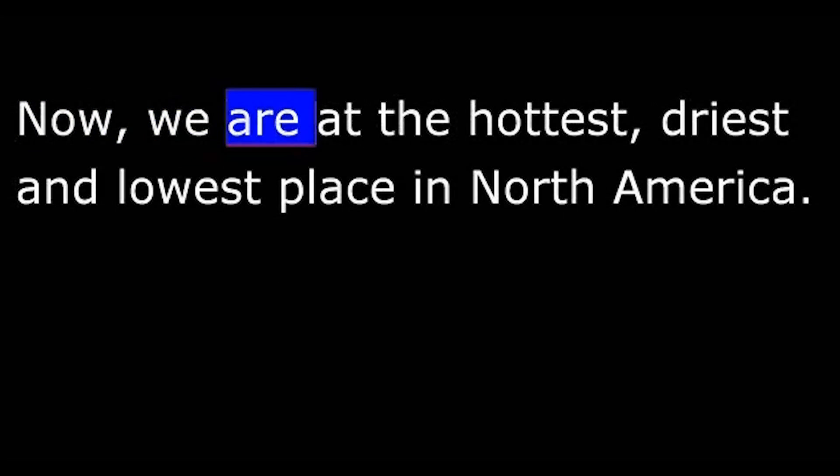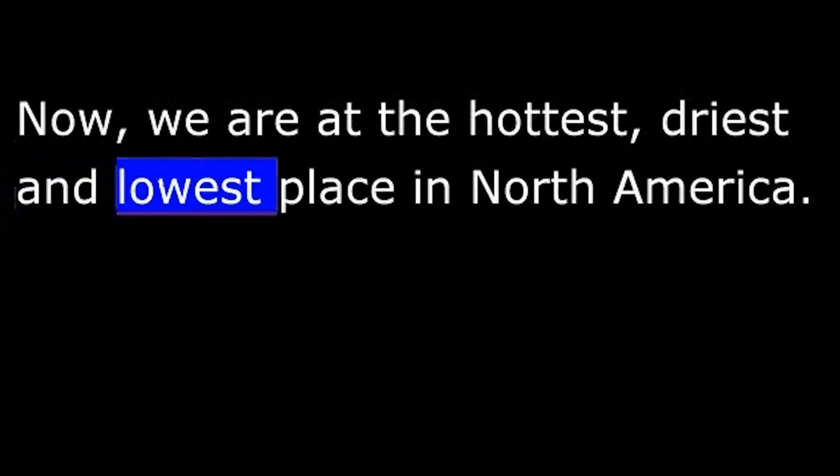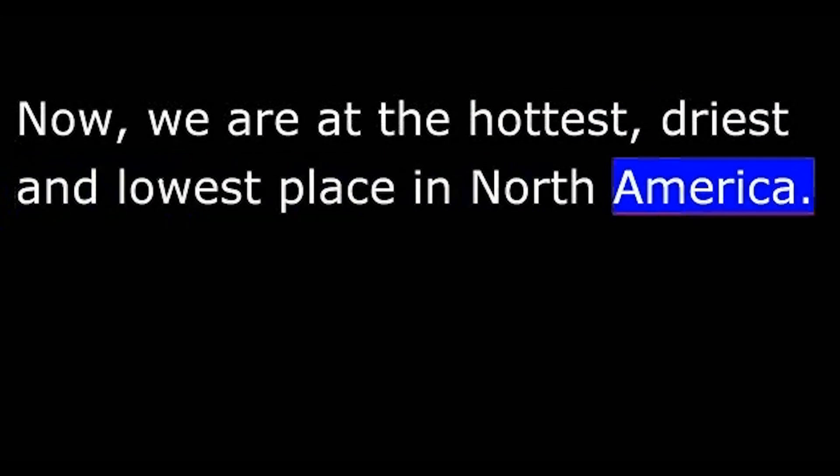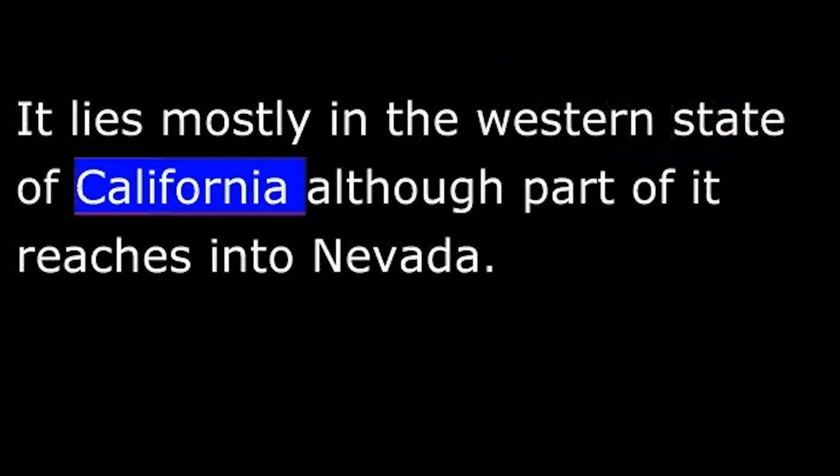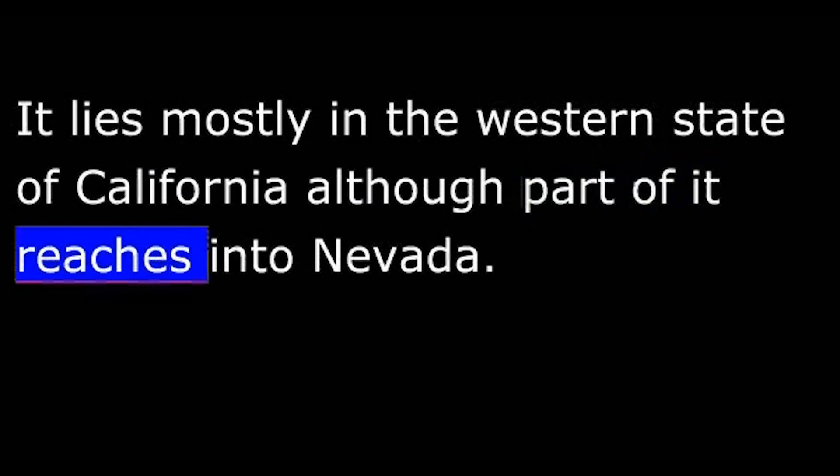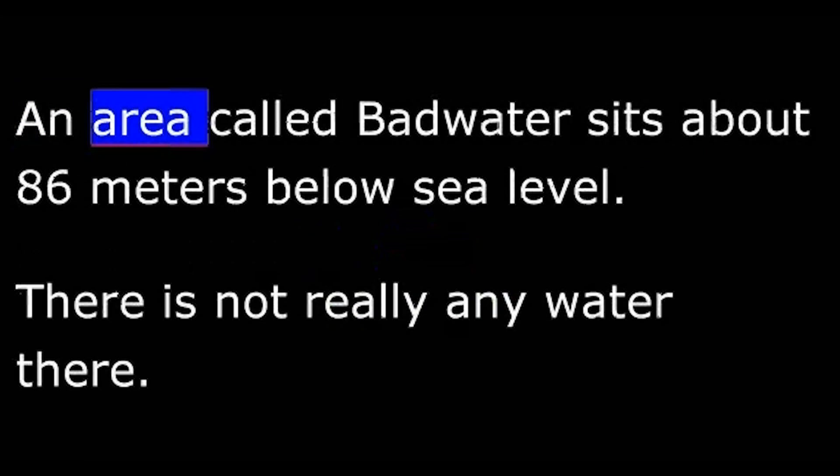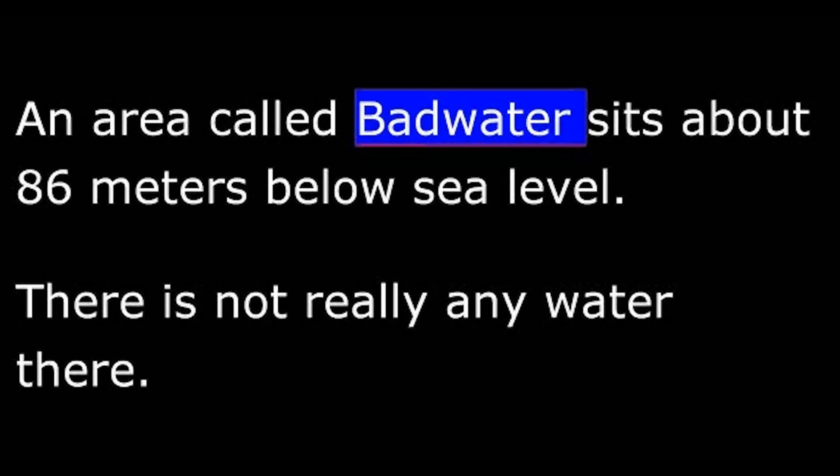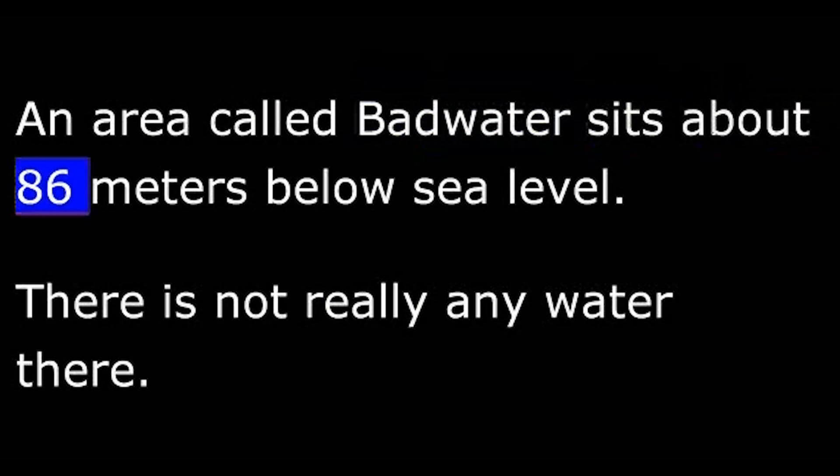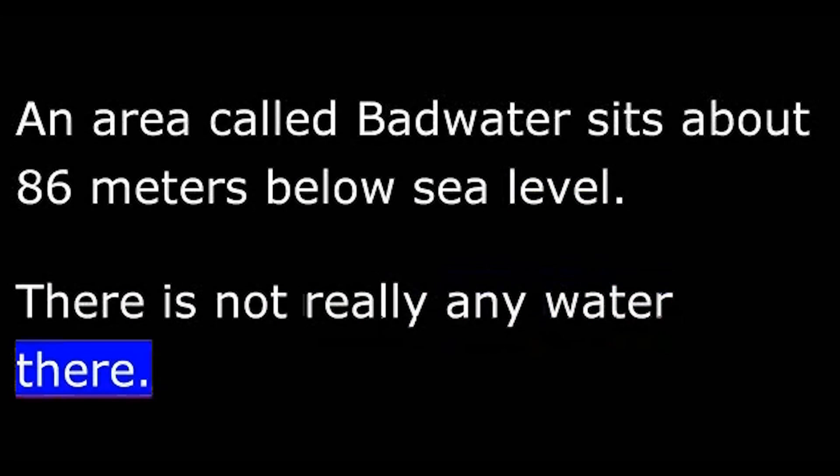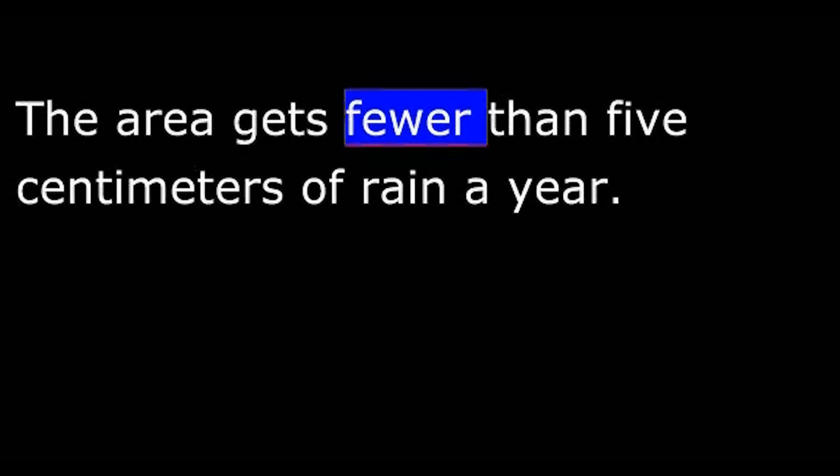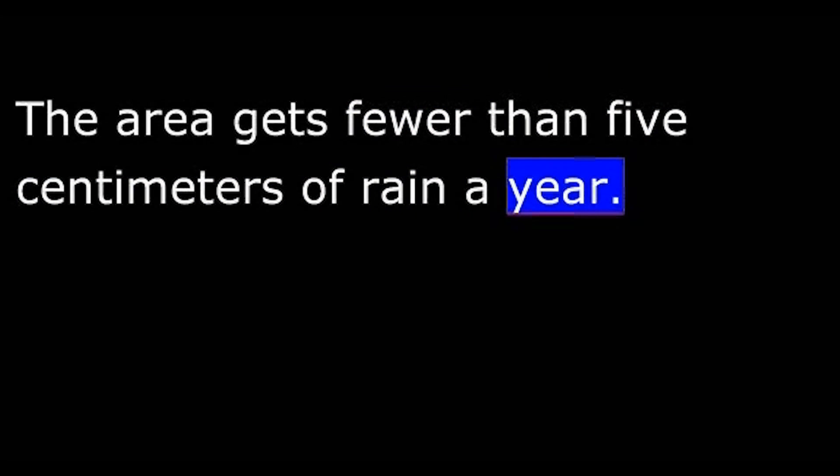Now we are at the hottest, driest, and lowest place in North America. Death Valley is part of the Mojave Desert. It lies mostly in the western state of California, although part of it reaches into Nevada. An area called Bad Water sits about 86 meters below sea level. There is not really any water there. The area gets fewer than 5 centimeters of rain a year.